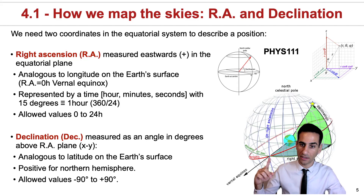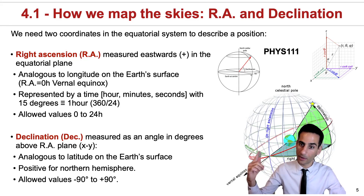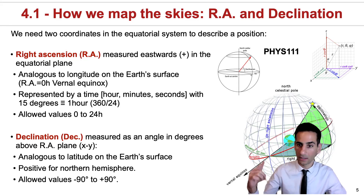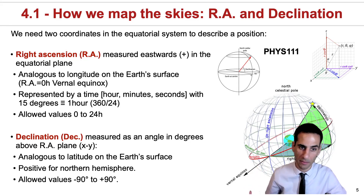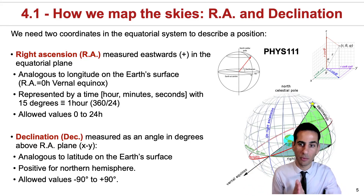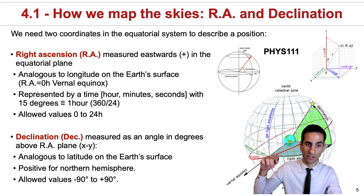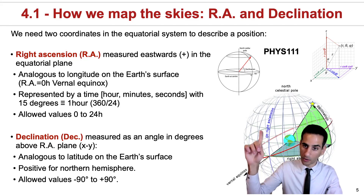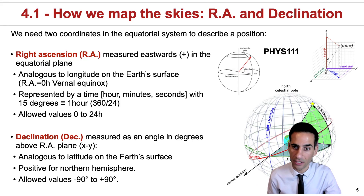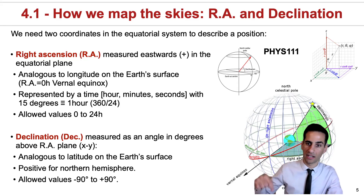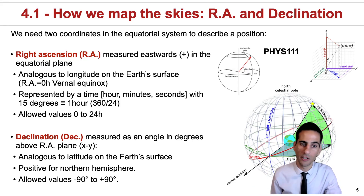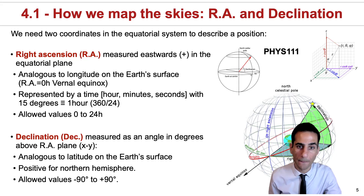Declination essentially measures the angle up and down relative to the right ascension plane. Up will be positive for the northern hemisphere, and down will be negative for the southern hemisphere. It is an angle reported in degrees above the xy plane. If you're at the north pole, your declination will be plus 90; if you're at the south pole, your declination will be minus 90.